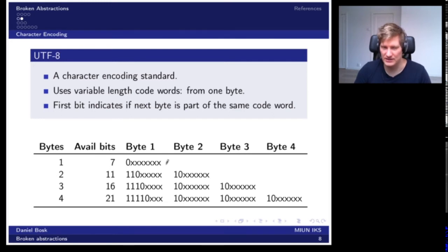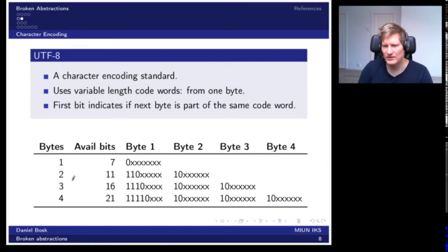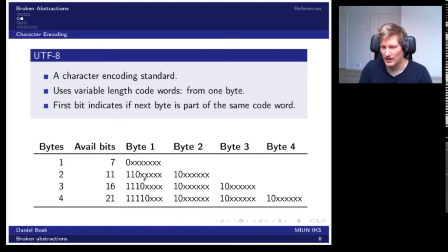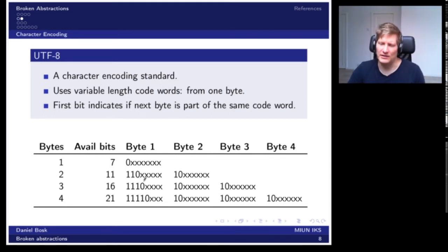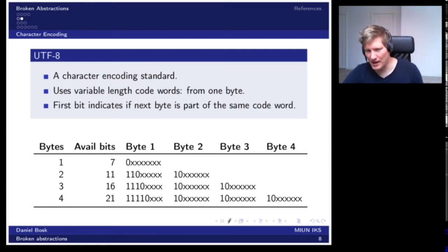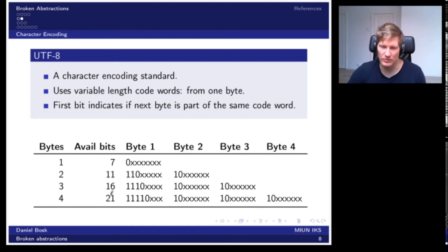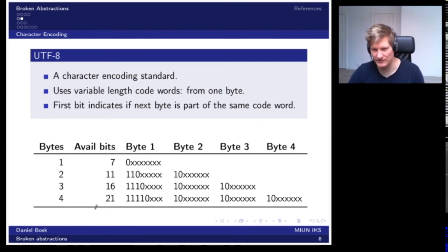If seven bits is not sufficient — for instance to add characters from Swedish, Chinese, or other alphabets — we need more bytes. For two bytes, we start with two ones followed by zero, then the next byte starts with one-zero, giving 11 bits total. The same pattern extends to three bytes and four bytes. In the four-byte version we have 21 bits available, so we can represent quite a lot of characters in UTF-8.